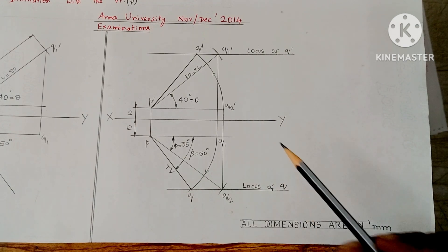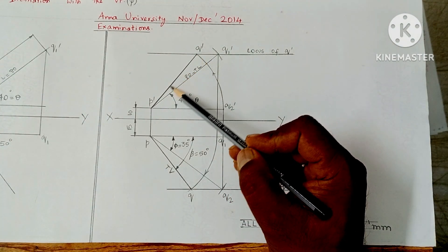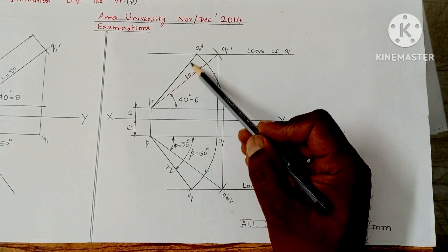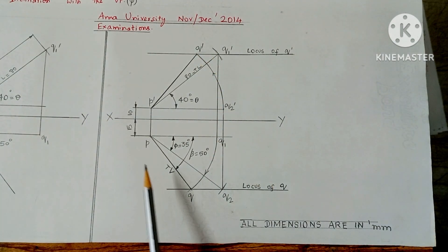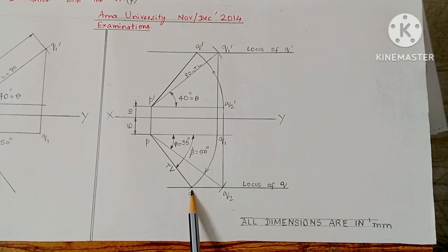Moreover, the final front view P' and Q' shall be joined using H or HB pencil to appear dark. Similarly, PQ is the final top view drawn using H or HB pencil to appear dark.